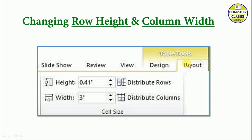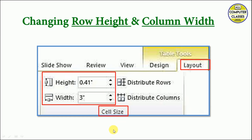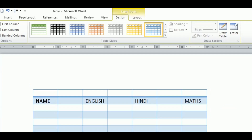Once you select the desired location, you will see the Table Tools again. Since we are making a structural change, it will be available in the Layout tab. In the Layout tab we have the Table Size section, which shows Height and Width. We can use the up and down arrows to increase or decrease — up arrow to increase and down arrow to decrease — both for height and for width.